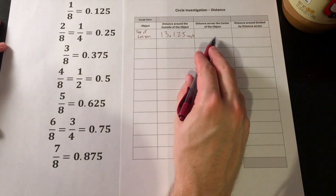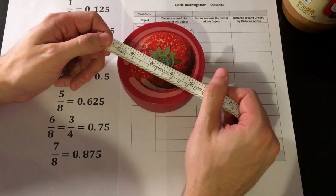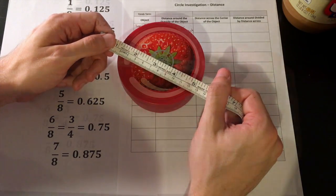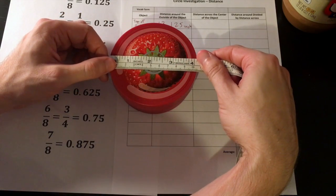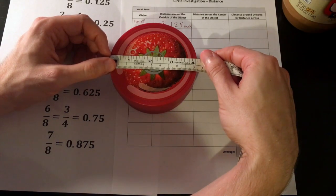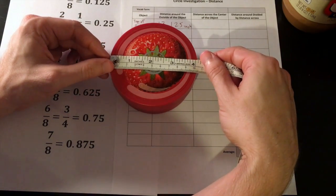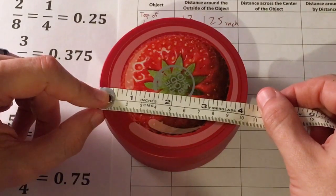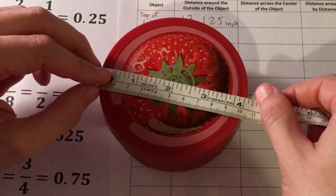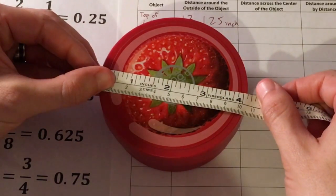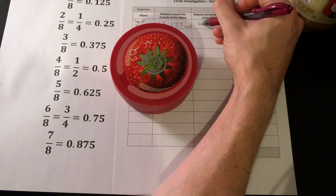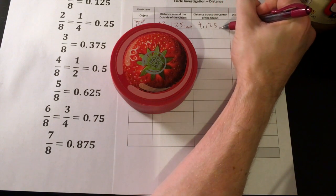All right, now let's measure the distance across the center of the object. If you're using the string and ruler method, use a ruler here when you measure the distance across the center of the object. One note is that the distance across the center is going to be the longest possible measurement. Notice when I'm measuring here, clearly a little bit off center, I'm getting 4 inches, but whenever I put it where it's supposed to be, it's actually a little bit closer to 4 and 1/8. So 4 and 1/8 is going to be 4.125 inches.